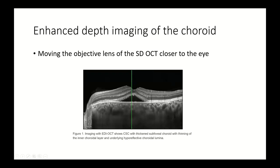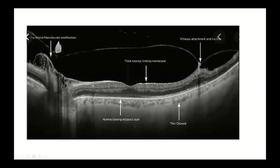Other than swept source and Fourier domain OCT, another technique to improve choroidal imaging is enhanced depth imaging — achieved by moving the objective lens of the spectral domain OCT closer to the eye. Here is a beautiful swept source OCT scan of a patient with proliferative diabetic retinopathy, showing pre-retinal fibrovascular proliferation, vitreoretinal traction, intact photoreceptor layers, and the choroid is also visualized.